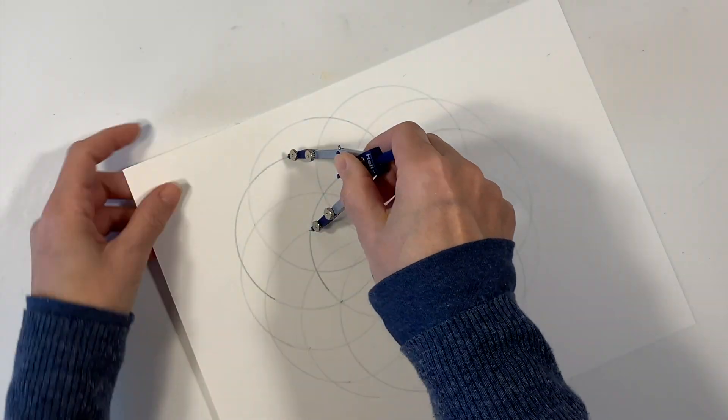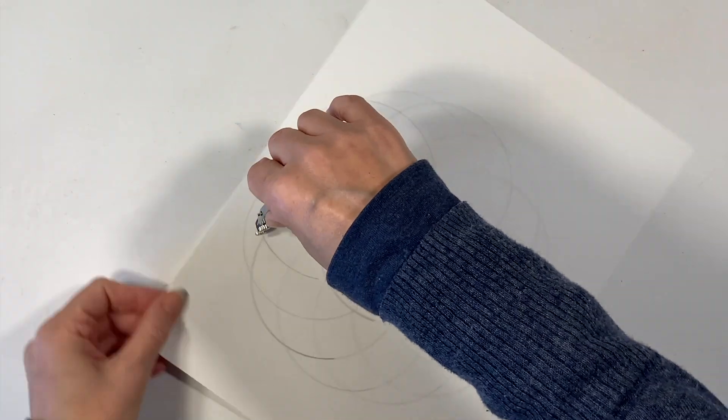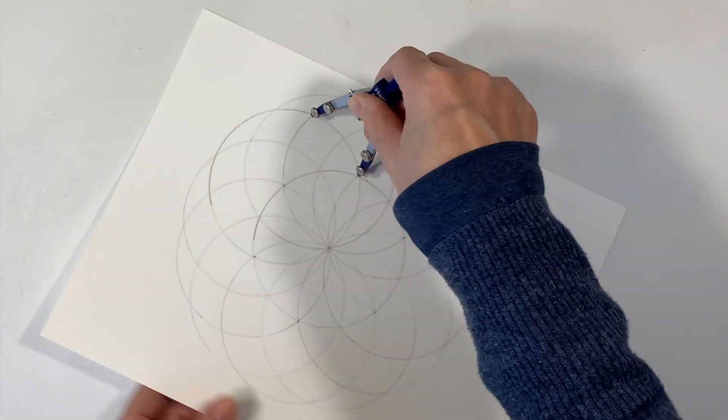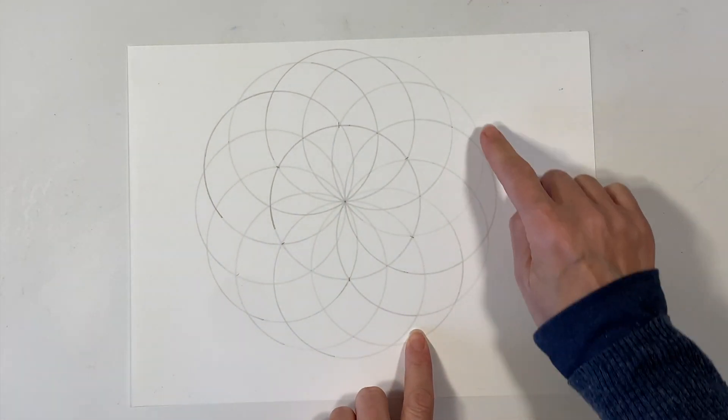Now you can actually set your compass to any radius that you'd like. I just found that this was enough that it stayed within my 9 inch by 12 inch paper.